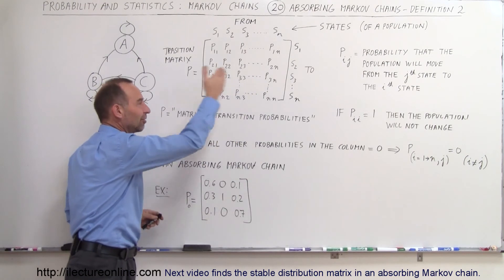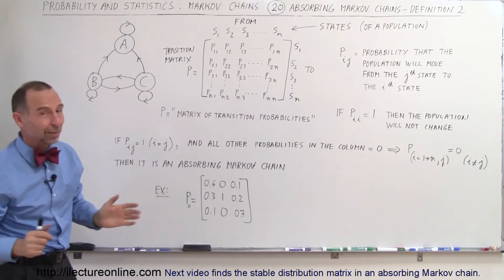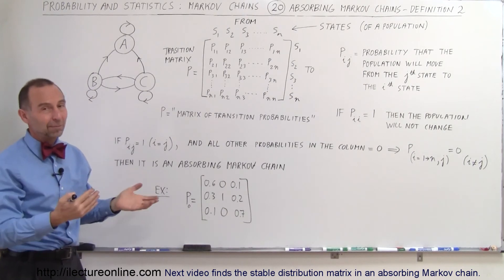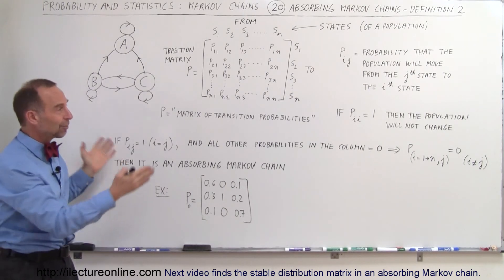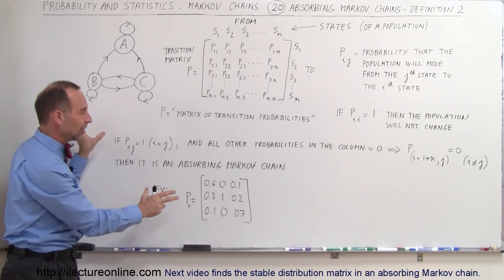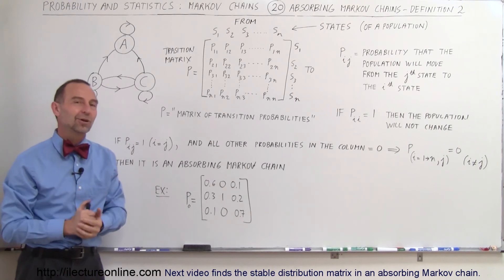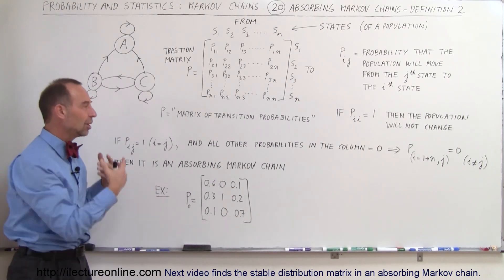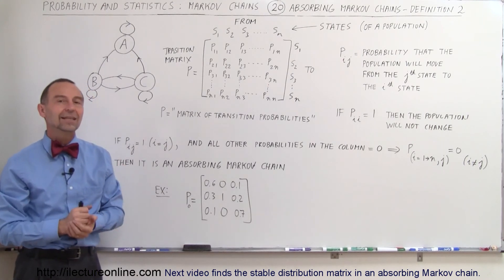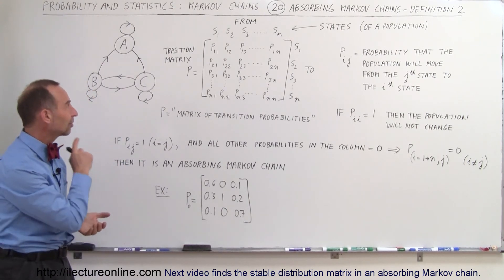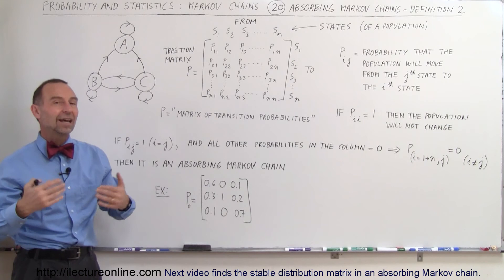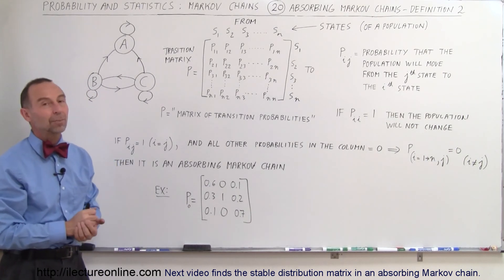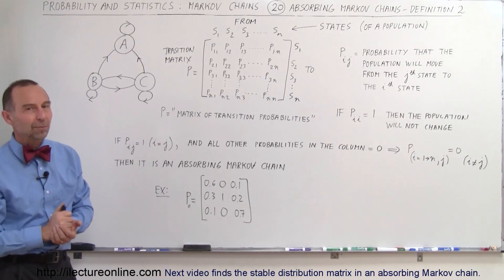When you look at the verbiage of the definition in mathematics, it becomes a little more complicated to understand. But that's what mathematics is for — to describe things in that language. As long as we understand what it says, we're in good shape. Now we'll go ahead and show some examples of how to actually use and calculate these Markov chains, how to find the transition matrix, and how to find the stable matrix you eventually end up with when you have an absorbing Markov chain.